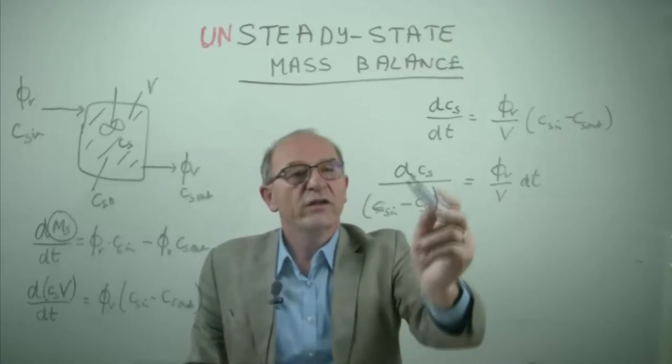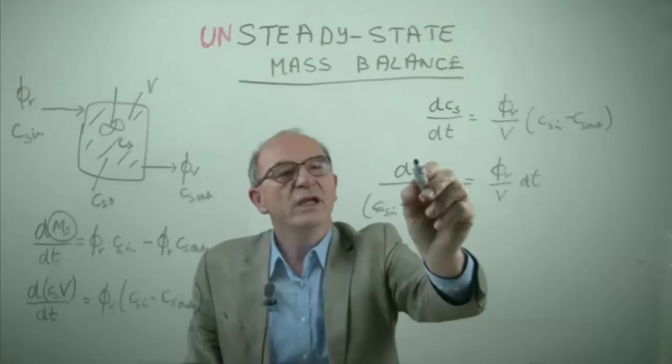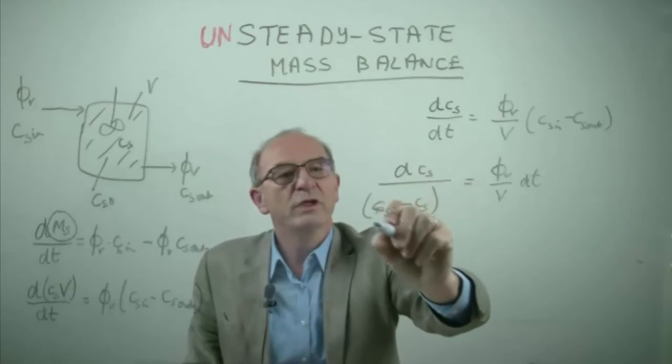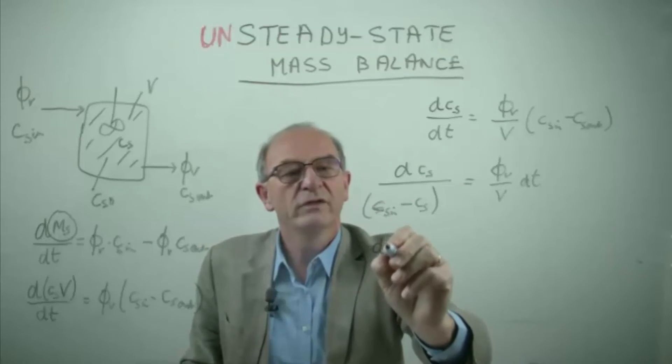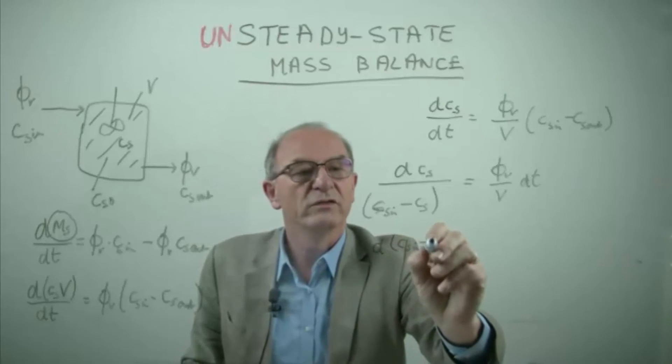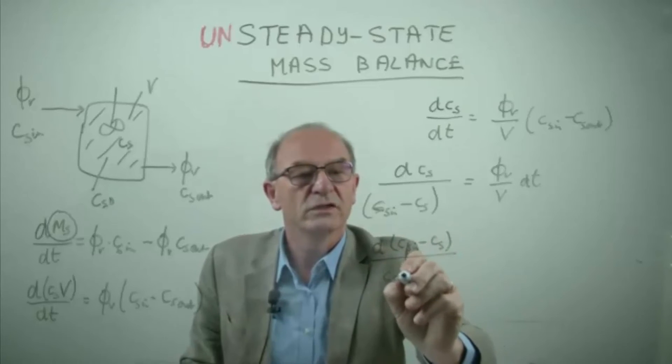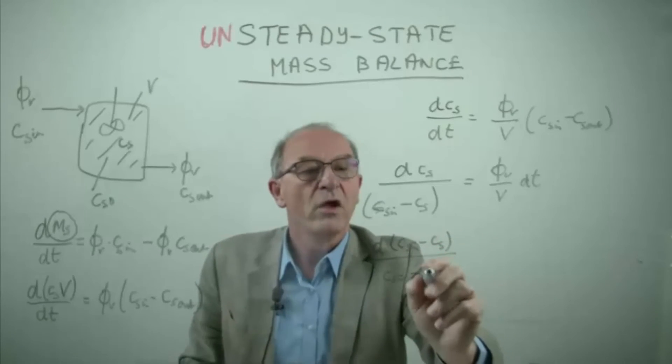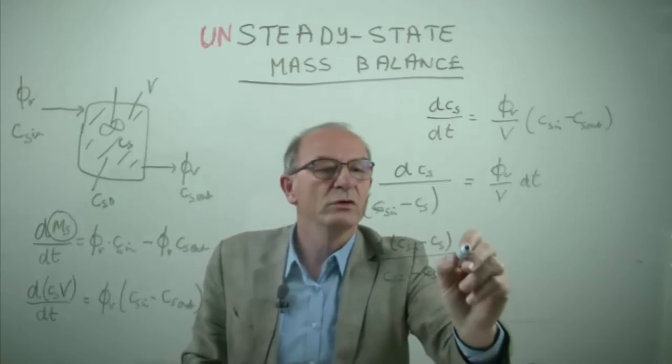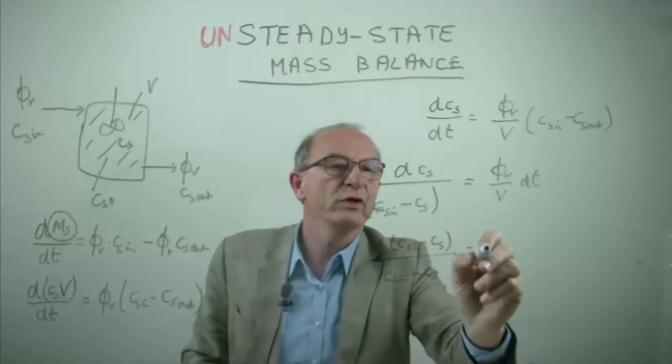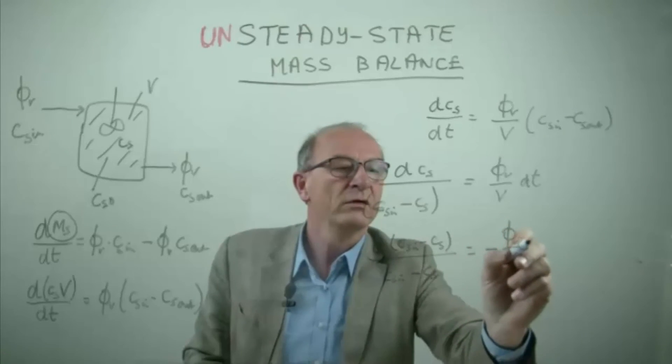To integrate these two sides we need here the same variable as below the line. So we rewrite this as C_s_in minus C_s divided by C_s_in minus C_s. But in this case we have introduced a minus, so we have to put a minus in this equation on the right side, giving us minus dt.